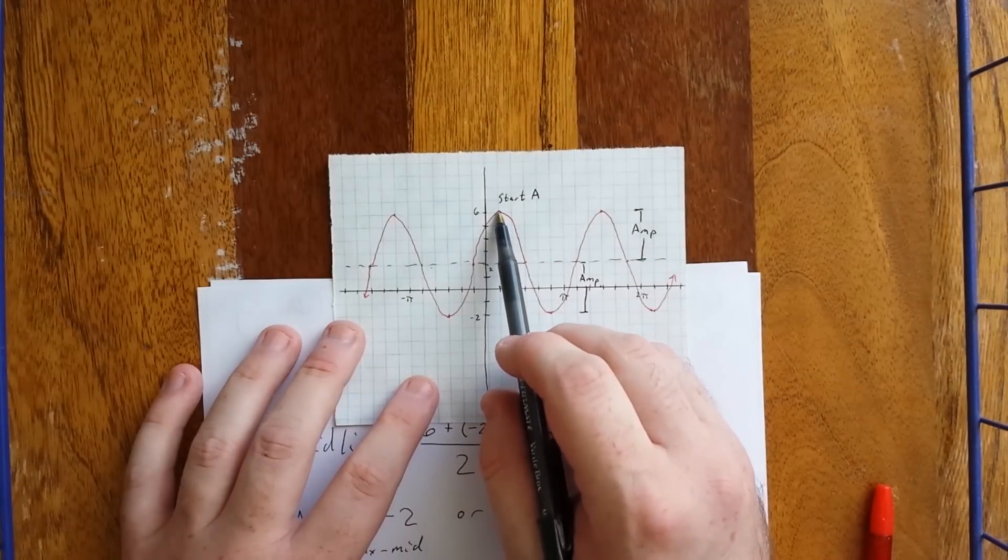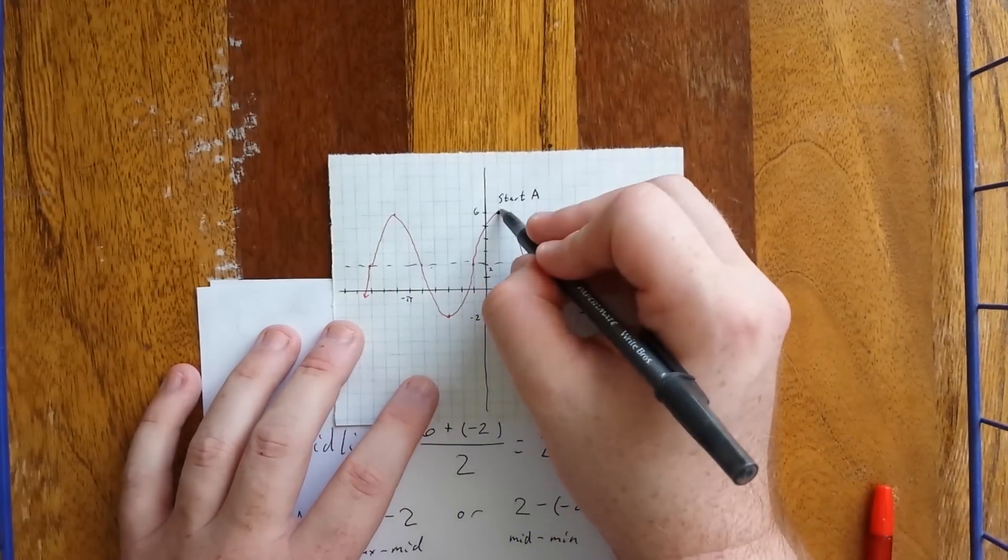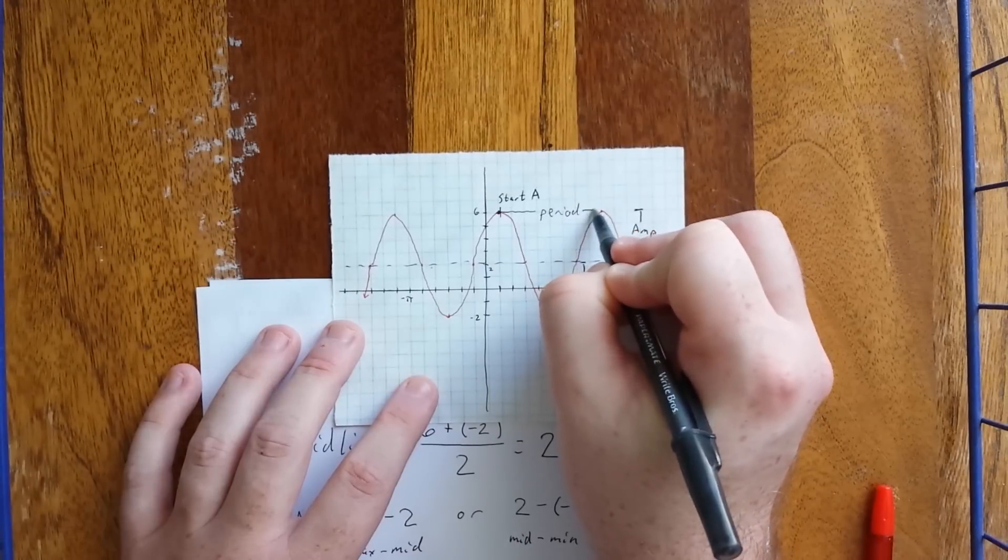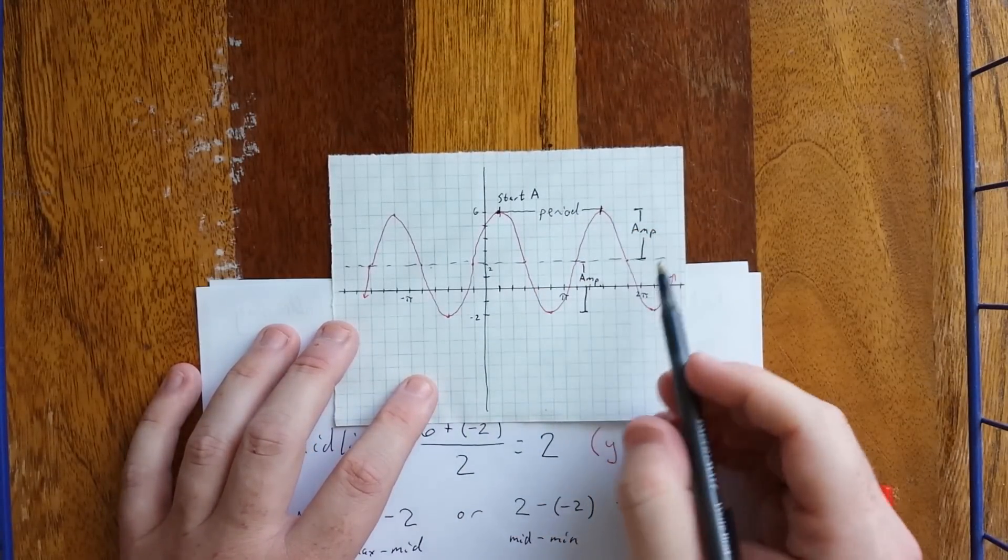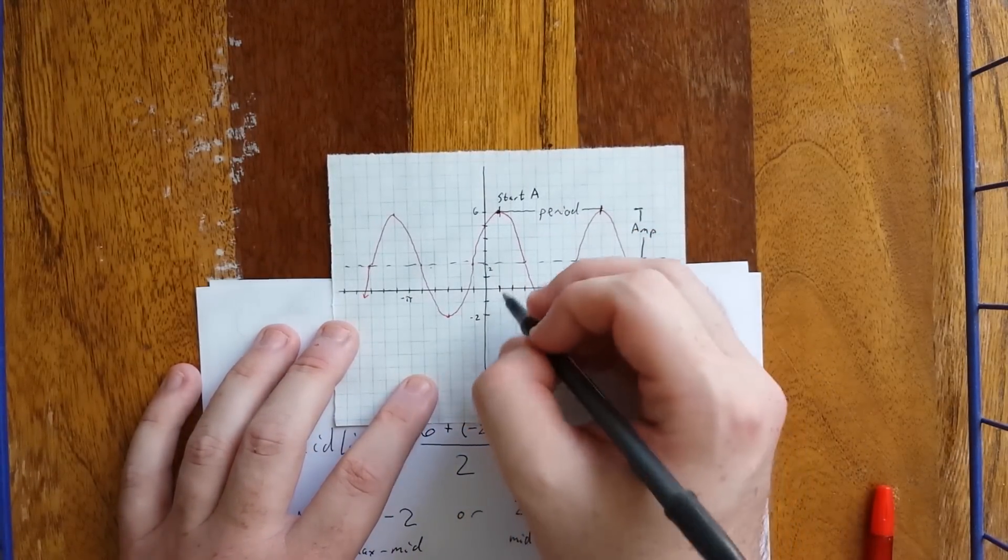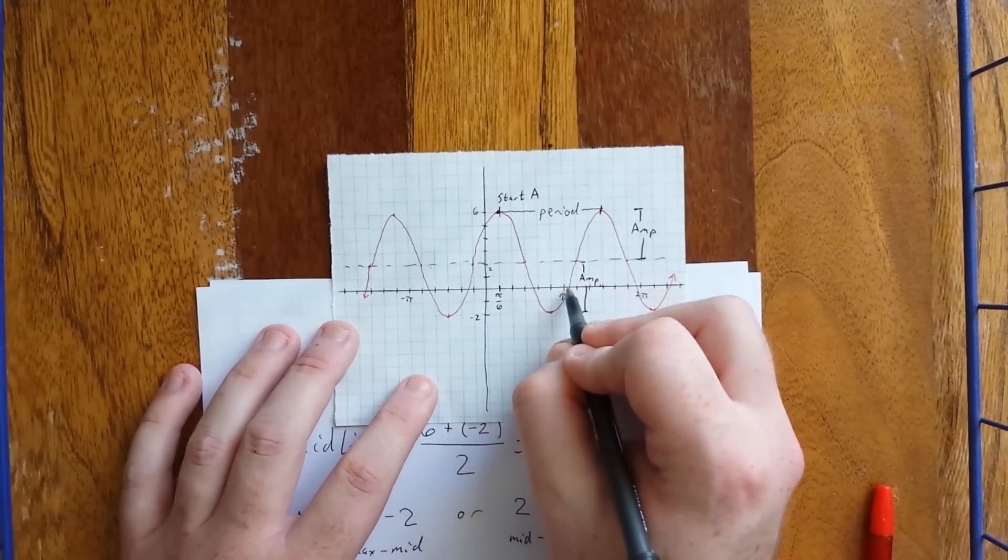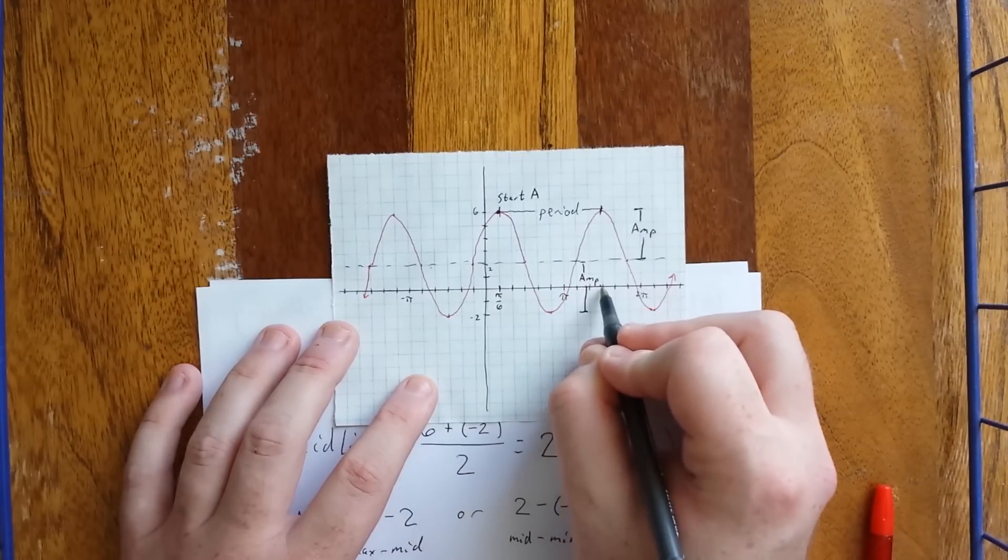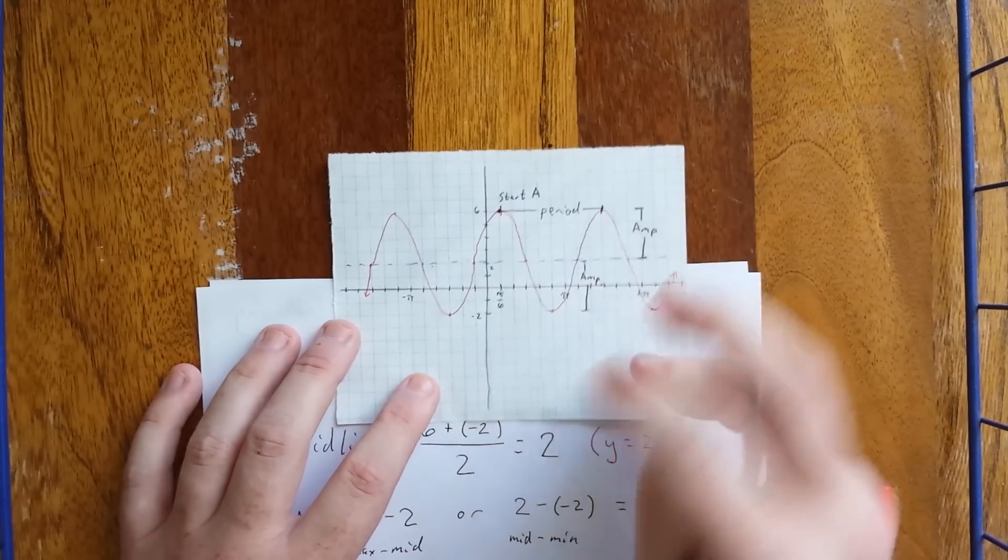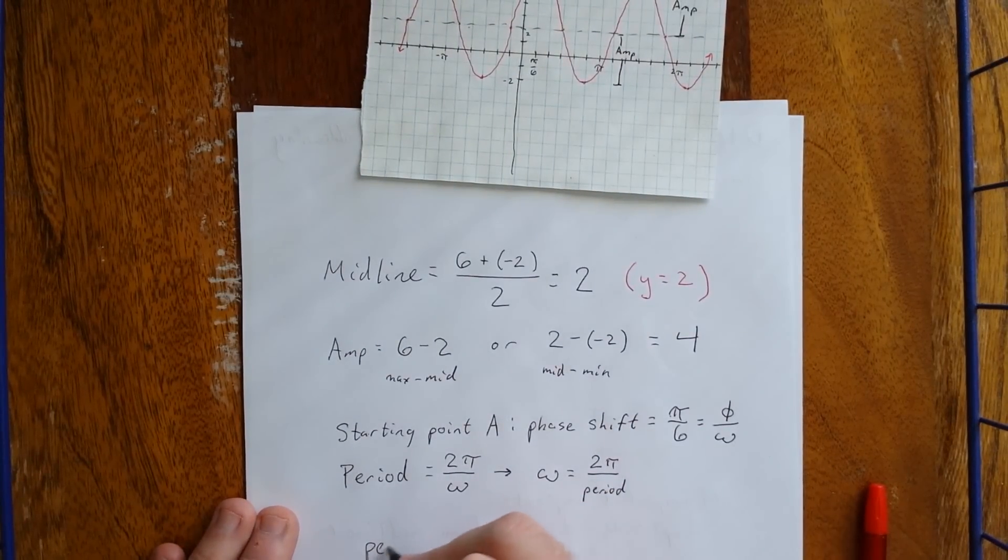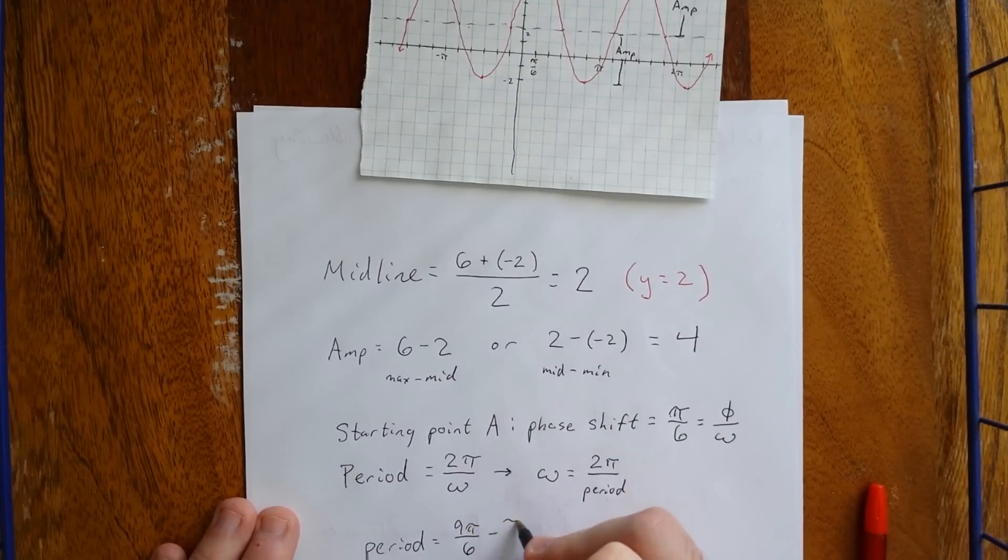The period is the horizontal distance between a maximum and a maximum. So this guy right here is your period. Now, counting all the tick marks, this was 1 pi over 6. So count with me. That will be 2, 3, 4, 5, 6 pi over 6, 7, 8, 9 pi over 6. So again, to calculate the distance between things is to take their difference. So the period is going to be 9 pi over 6 minus pi over 6.